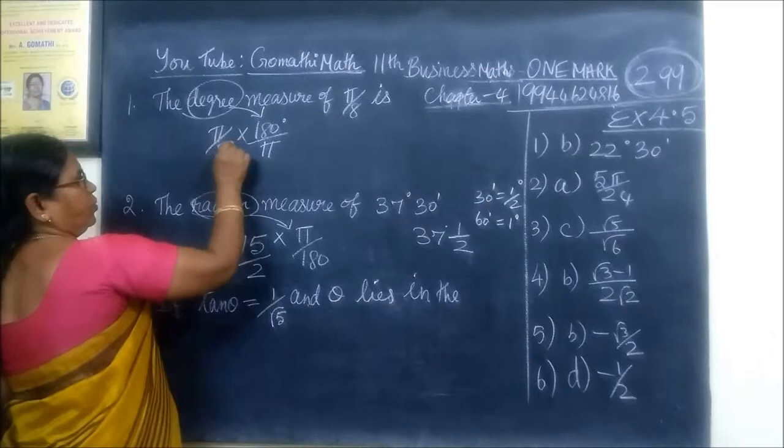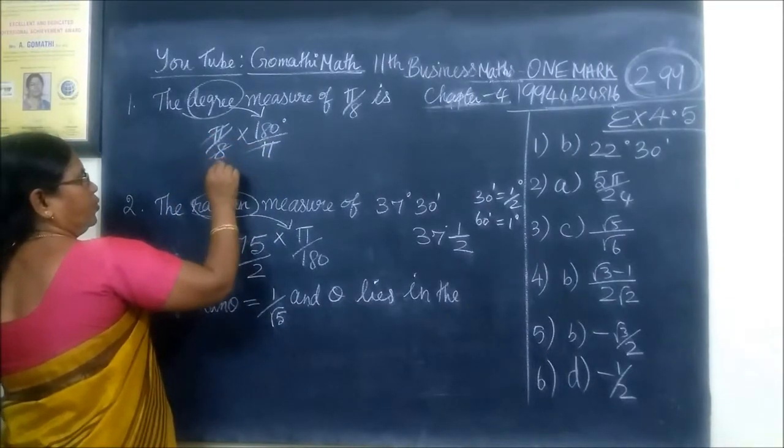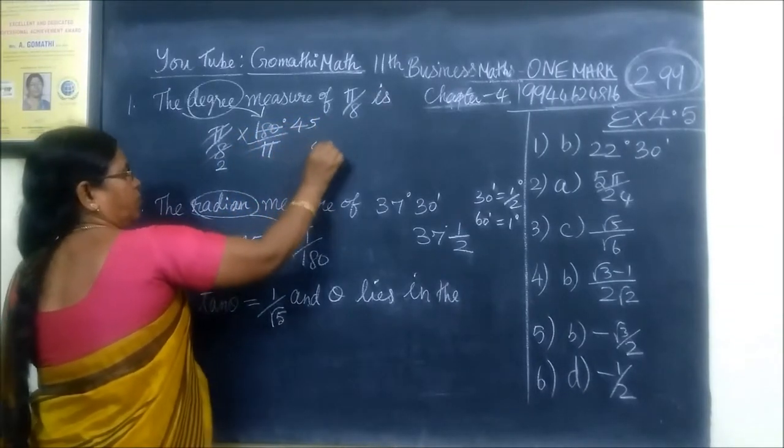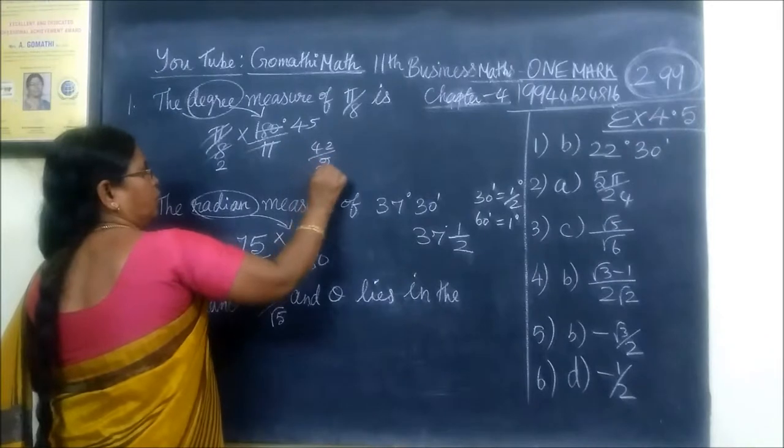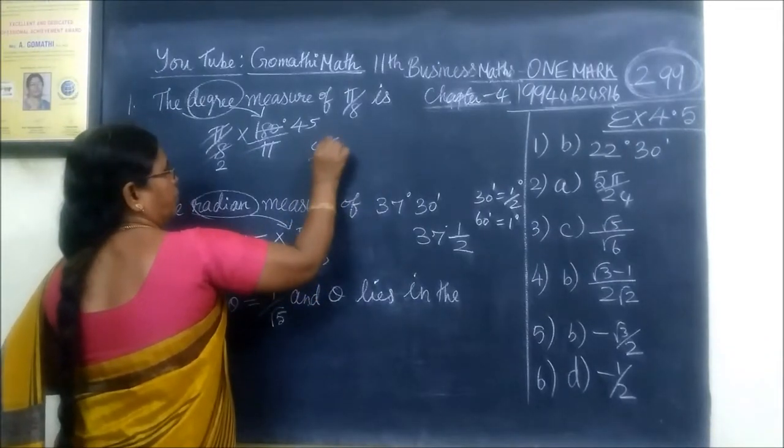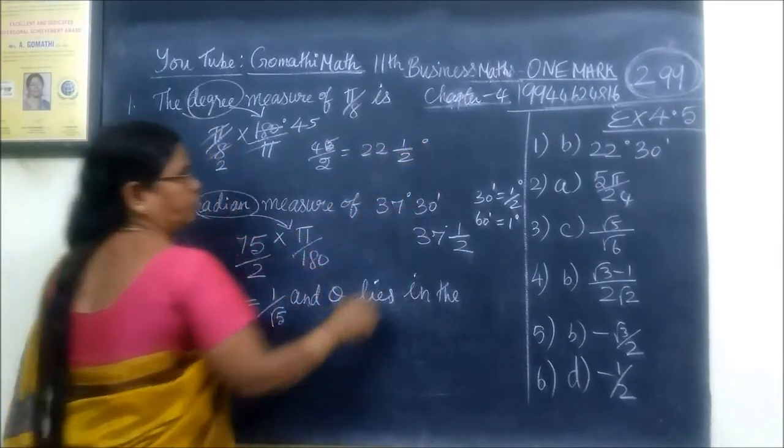This is 75 by 2. This is 5 by cancel. If you cancel the number 4 times, this is 2 times, this is 5 times. 45 by 2. 45 by 2 is 22 degree, 22 and half degree. The answer is correct.